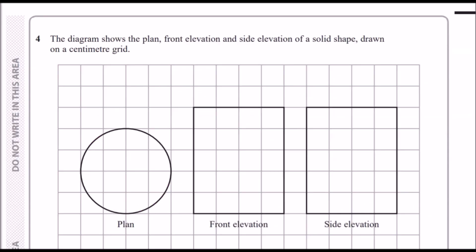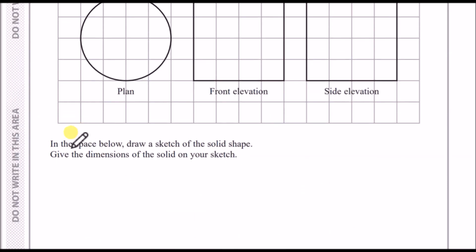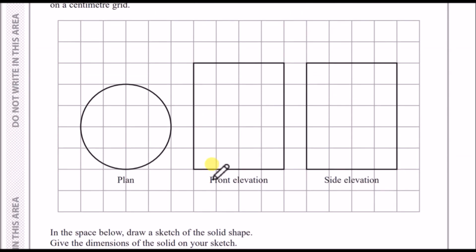Number four: the diagram shows the plan, front elevation, and side elevation of a solid shape drawn on a centimeter grid. In the space below, draw a sketch of the solid shape. We have to draw a 3D representation of these diagrams. What I would do is firstly label the sizes. We have a height of 5 and a width of 4 for both front and the side, and the radius of the circle is just 2. From a 3D perspective this looks like a cylinder because you've got a circular base.